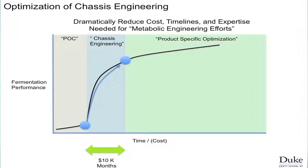One of our funders has wanted us to basically jump this curve and greatly reduce that set of costs, so that we can envision $10,000 in months to get through this stage for any different product and any different process. We'd like to dramatically reduce the cost, timelines, and expertise needed for these efforts to make microbes and biocatalysts.